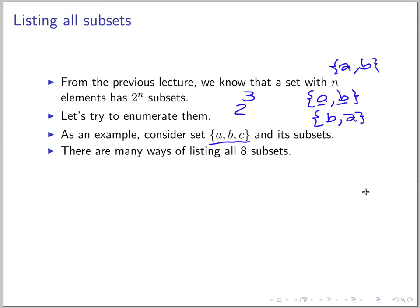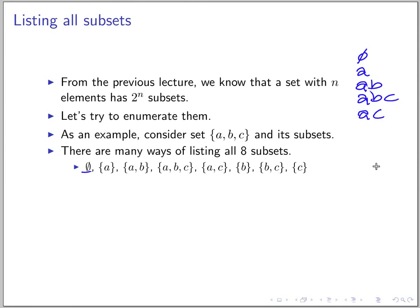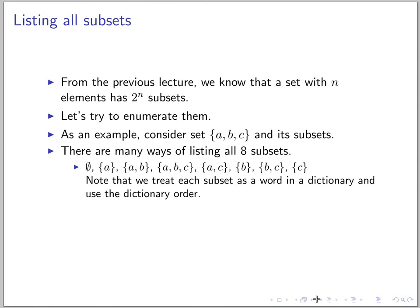There are many ways to list these eight subsets. One way is to order the subsets by looking at the empty set first, then a, then a b, then a b c. If you look at that, it's like the empty word, then a, then a b, then a b c, then a c — this is basically dictionary order. So this is how we order the subsets using dictionary ordering.